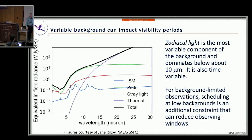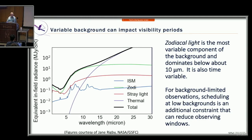If you're pushing to the faint limit and getting into the background-limited regime, it's going to affect your ETC calculations, your signal-to-noise expectations. From a schedulability standpoint, background level also affects your window of opportunity to observe — restricting it based on background as a function of time.